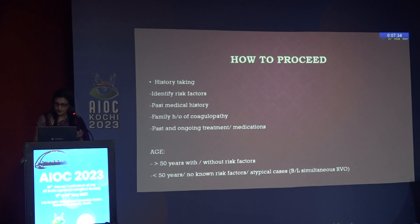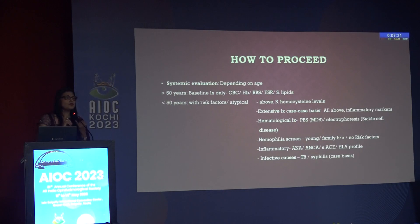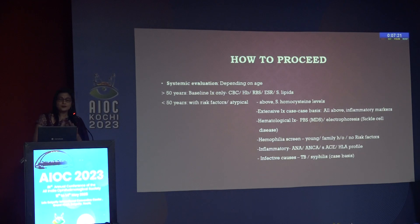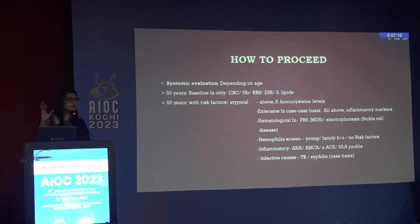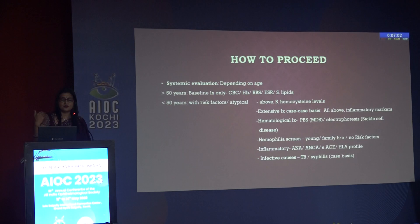For younger patients, look for hematological risk factors — the coagulopathies — and inflammatory risk factors, broadly the collagen vascular diseases. For hematological workup: protein C, protein S, antithrombin 3, Factor V Leiden, MTHFR, peripheral smear — the whole gambit for coagulopathies. For inflammatory causes: ANA, ANCA, serum ACE, HLA profile — all of that depending on systemic features, with the help of a rheumatologist.